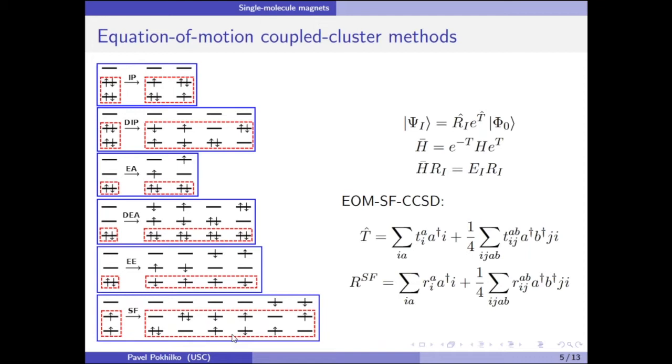We can also change the number of electrons. If we remove one or two electrons we get a method for ionization potential. Or we can attach electrons leading to electron attachment variant. These methods are useful for strongly correlating systems because they can access electronic states with different orbital occupations.